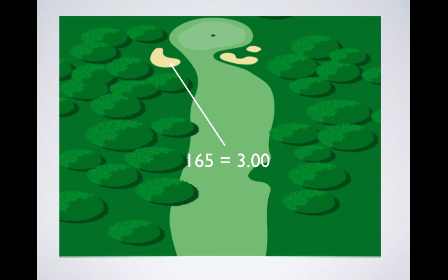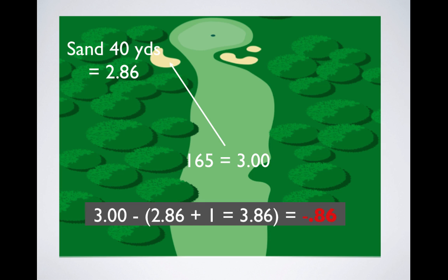Another example: we're at 165 yards and we miss our approach shot into a greenside bunker 40 yards from the pin with a value of 2.86. Here, the starting position of 3 minus the end position of 2.86 plus the stroke to get there equals 3.86. We have lost 0.86 shots to par — almost a full shot — by missing into a greenside bunker from 165 yards in the fairway.